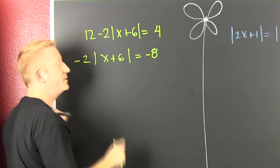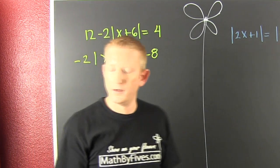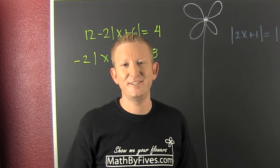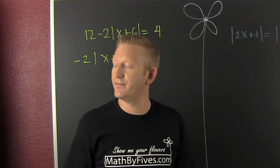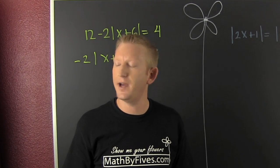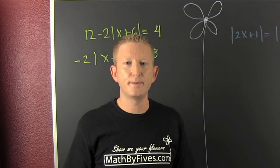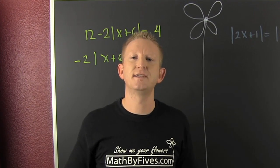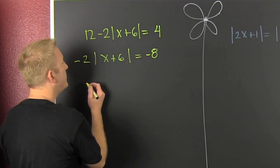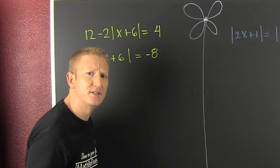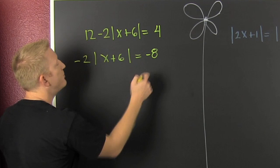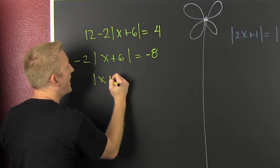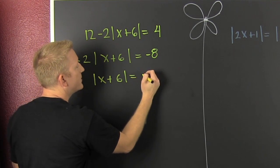So now, do we distribute that minus 2 in? You will never, ever distribute into the absolute value. I need to isolate the absolute value — I do not distribute inside. So I divide both sides by that minus 2, and then I have the absolute value of x plus 6 equal to 4.